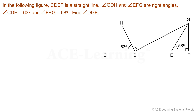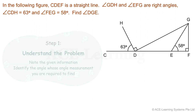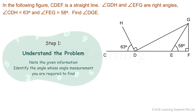We are to find the solution to this problem. What should be our approach? Step 1: Understand the problem. Note the given information. Identify the angle whose angle measurement you are required to find.